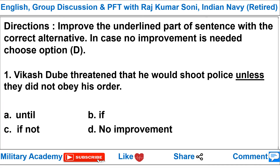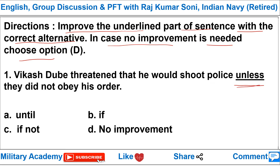In the exam, the directions will be: improve the underlined part of a sentence with the correct alternative, and in case no improvement is needed, choose option D — No Improvement. You will be given one sentence with a part underlined. If there is an error, improve it using options A, B, or C. If there is no error, choose option D.